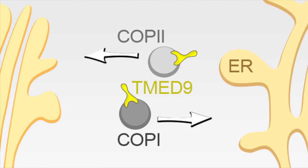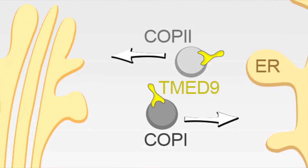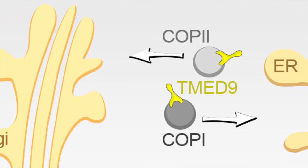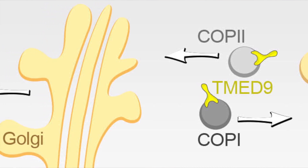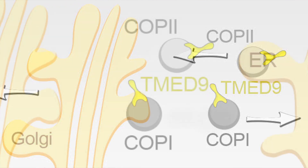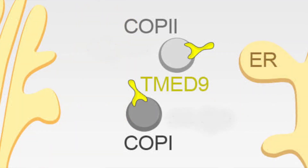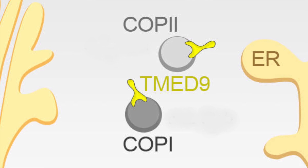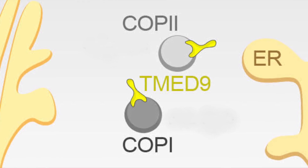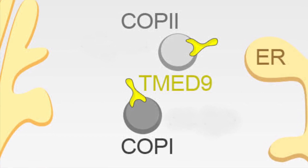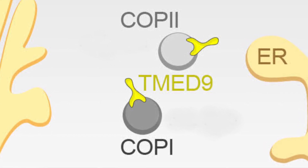What we have found out is that the mutant frameshift MUC1 protein is being trapped in the early secretory pathway, in between the endoplasmic reticulum and the Golgi. The protein is being found inside vesicles — COPI vesicles — together with the cargo receptor TMED9, and there it is being accumulated.